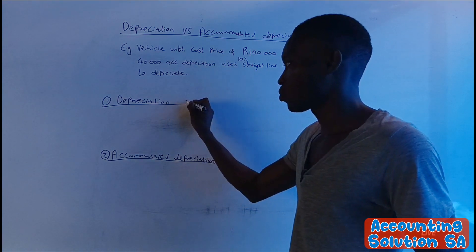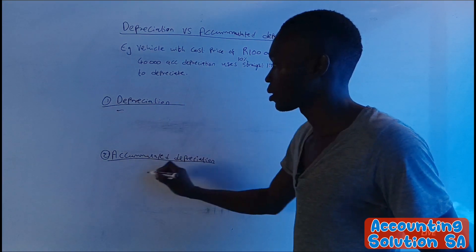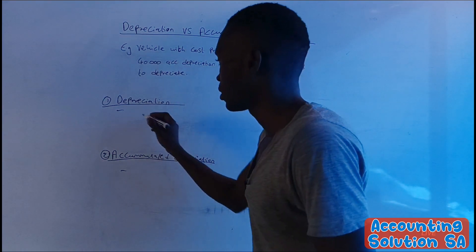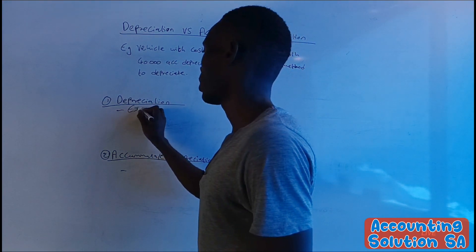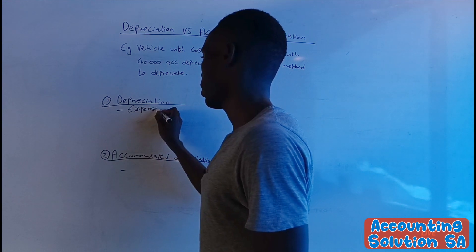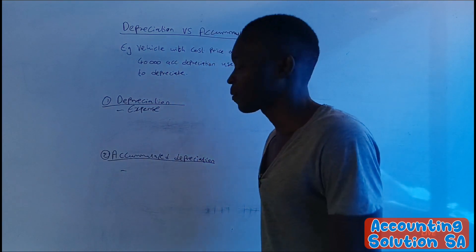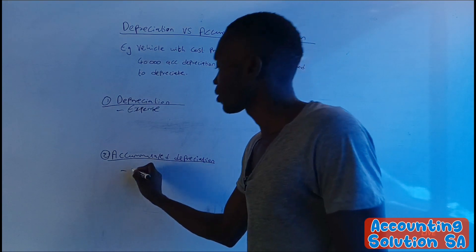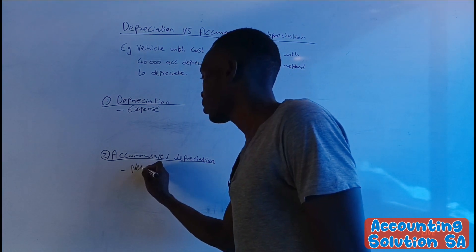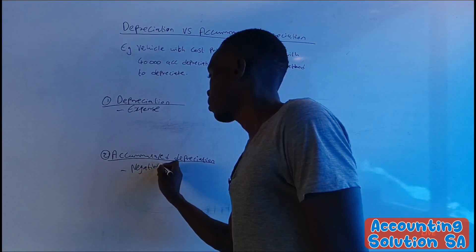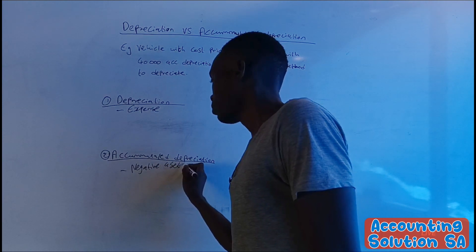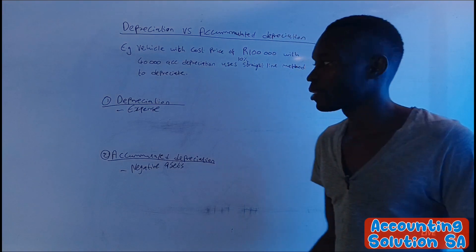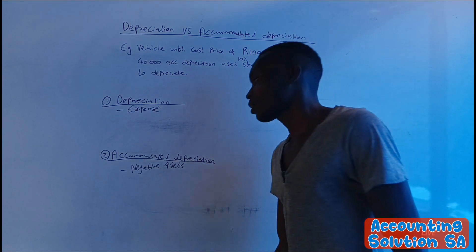Now, before we go back to the scenario, let's look at the differences. Difference number one: depreciation is an expense, while accumulated depreciation is a negative asset. The accounts we use to record these two are not the same — they are very different.